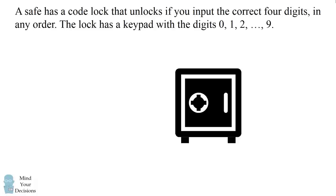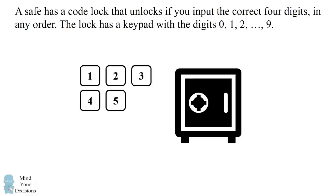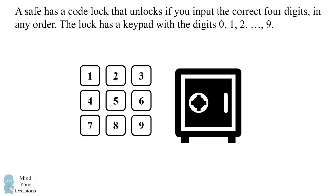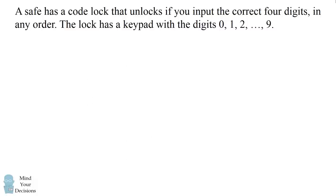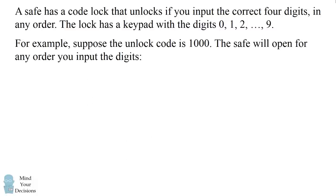Hey, this is Presh Talwalkar. A safe has a code lock that unlocks if you input the correct four digits in any order. The lock has a keypad with the digits going from 0 to 9. For example, suppose the unlock code is 1 0 0 0.